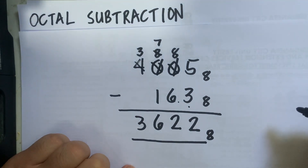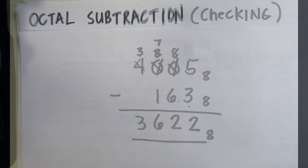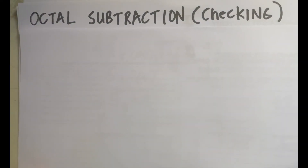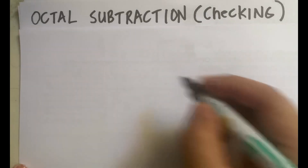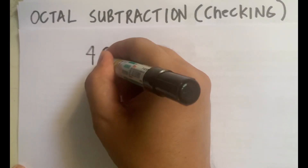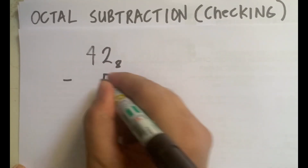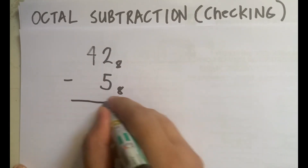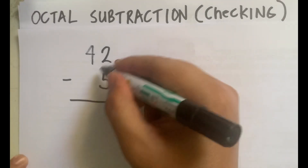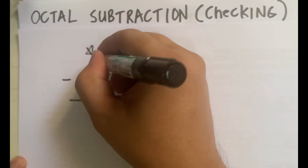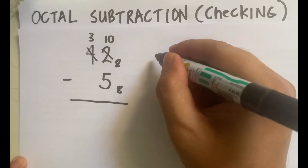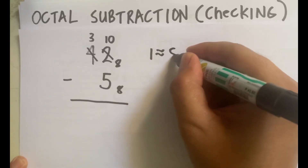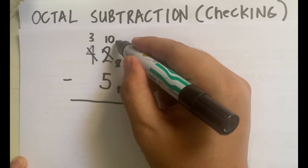That's it for octal subtraction. Now, to check if our answer is correct, we convert the octal numbers to decimal. Taking our first example: 42 base 8 minus 5 base 8. We do 2 minus 5 — 2 borrows 1 from 4, 4 becomes 3, and 2 becomes 10, because each one borrowed in octal is equivalent to 8, so we add 8 to 2.